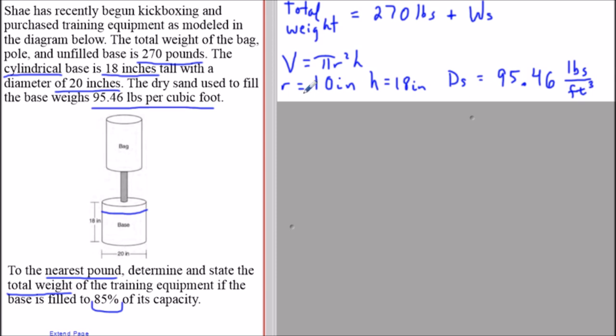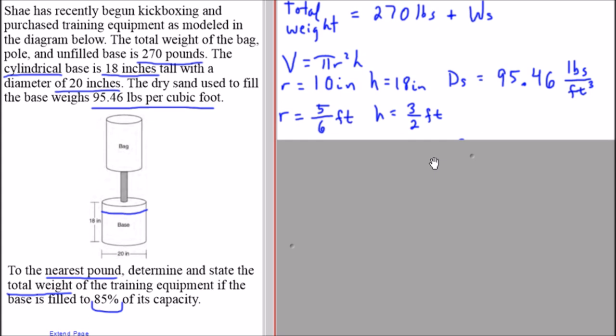One thing we could do preemptively is convert the radius and height to feet. We convert these to feet by multiplying by one foot divided by 12 inches. When we divide 10 by 12 it reduces to 5 over 6, and 18 divided by 12 reduces to 3 over 2.